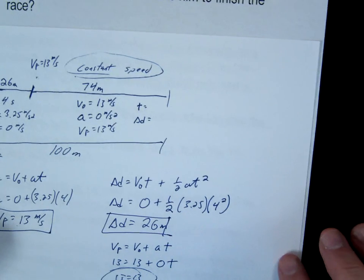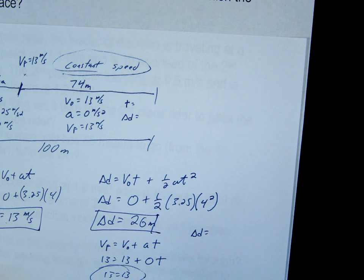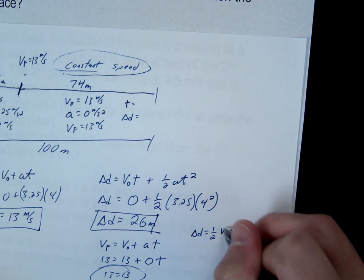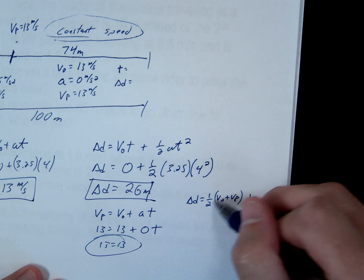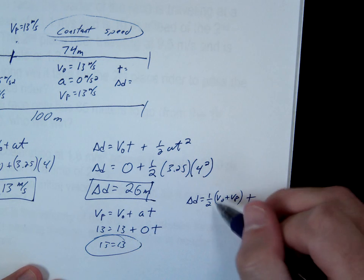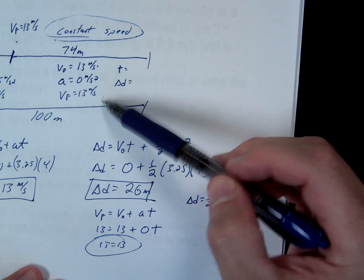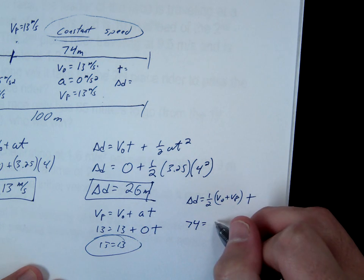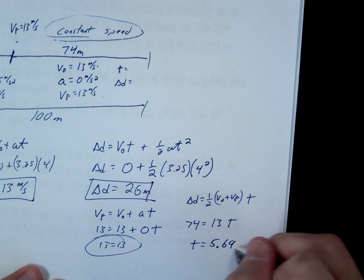What equation? Delta d equals, anyone want to pick one? One half V initial plus V final times t. This is the average. When the speed is constant, the average is the same thing. So 74 equals 13 times t. We get t equals 5.69.